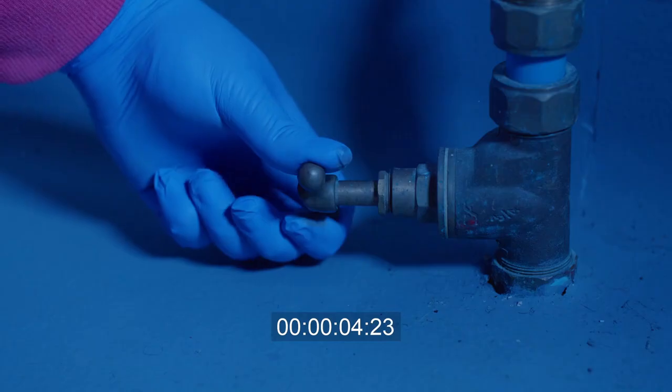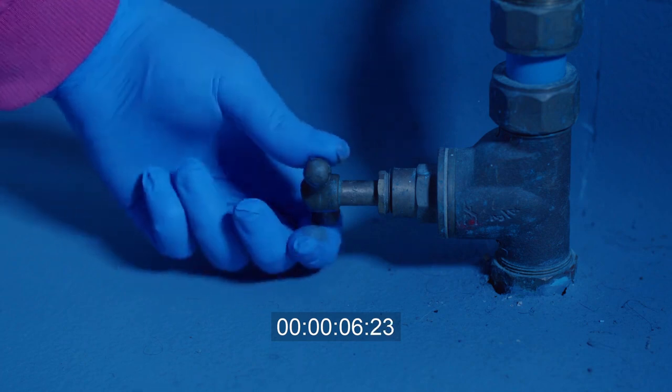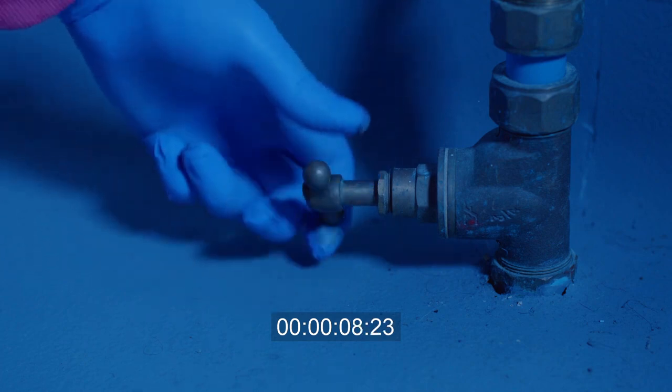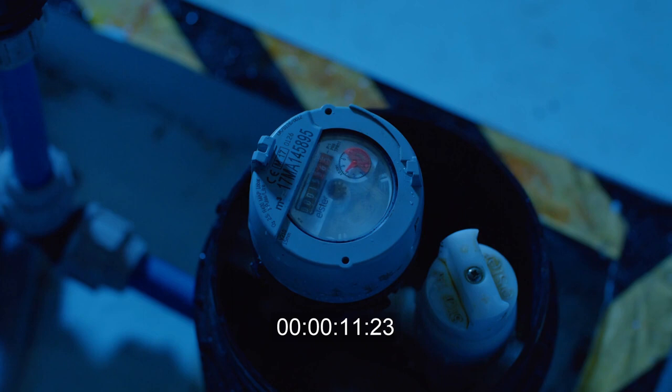Firstly, close the internal stop tap and calculate the amount of water escaping from the system by monitoring the water meter for one minute to quantify the volume of water. Remove the water meter and non-return valve and determine the correct size AquaP to use.